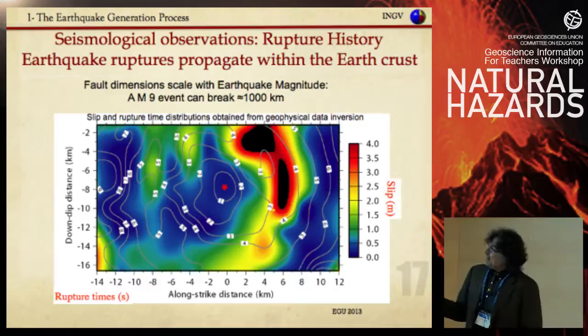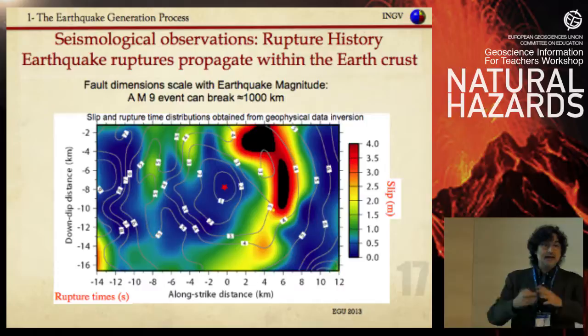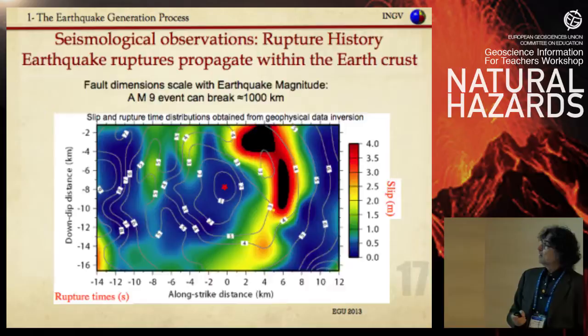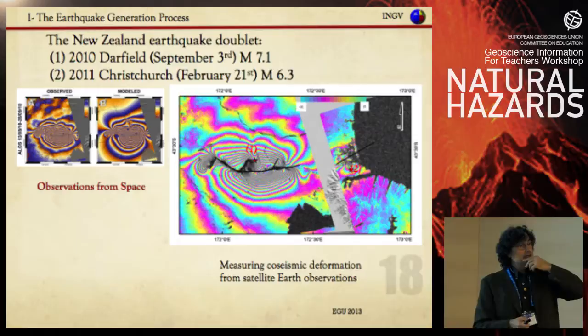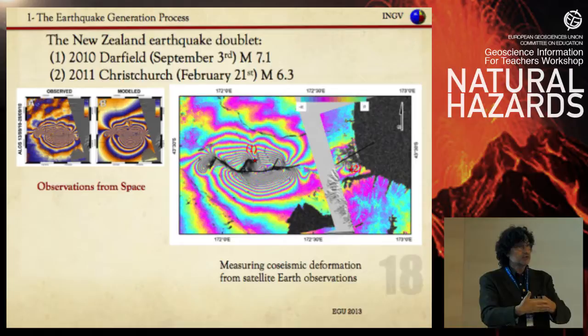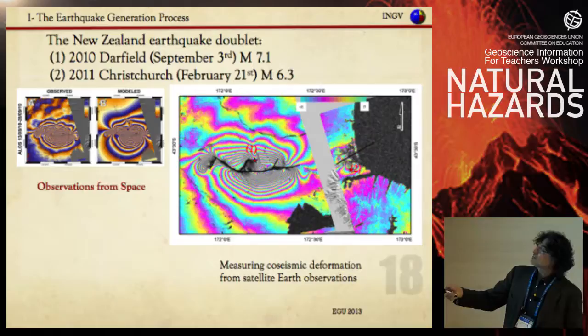To conclude this first part: the fault dimensions scale with magnitude. The larger the magnitude, the larger the fault — a magnitude 9 can break more than a thousand kilometers. We can even measure deformation from space using satellites: we take a picture before and after the earthquake, compute the difference using cross-correlation and interferograms, and these patterns show the deformation and the folds where earthquakes occurred. These are two earthquakes that occurred in New Zealand.